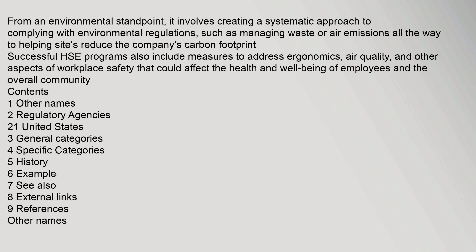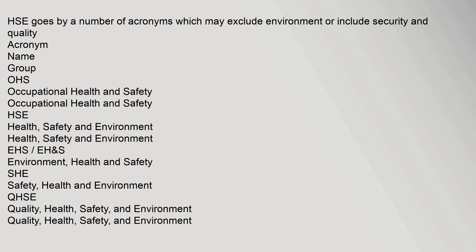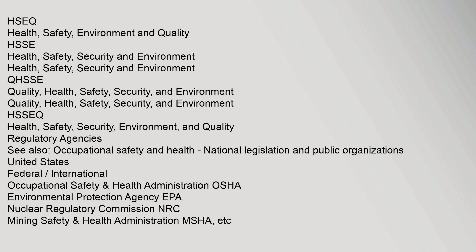HSE goes by a number of acronyms, which may exclude environment or include security and quality. These include: OHS — Occupational Health and Safety; HSE — Health, Safety and Environment; EHS — Environment, Health and Safety; HSEQ — Health, Safety, Environment and Quality; HSSE — Health, Safety, Security and Environment; QHSSE — Quality, Health, Safety, Security and Environment; and HSSEQ — Health, Safety, Security, Environment and Quality.